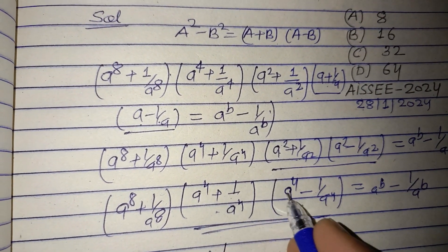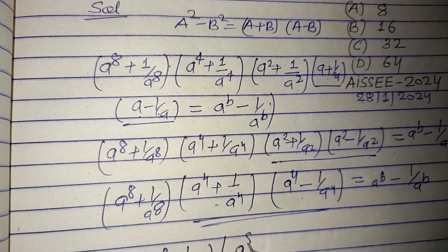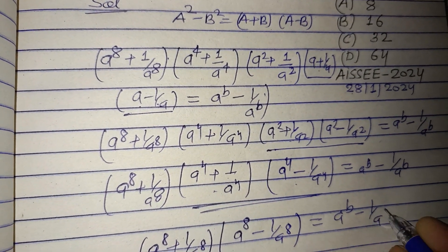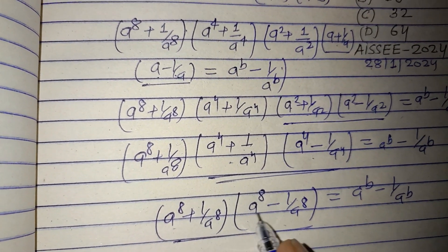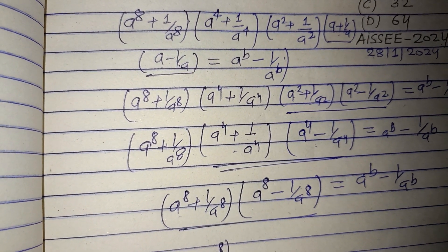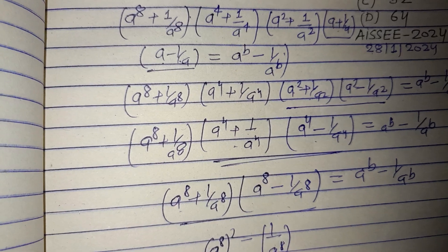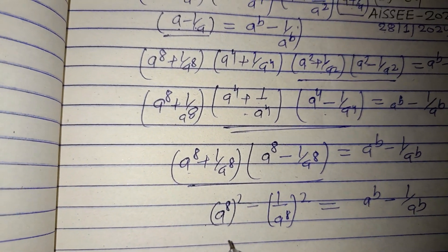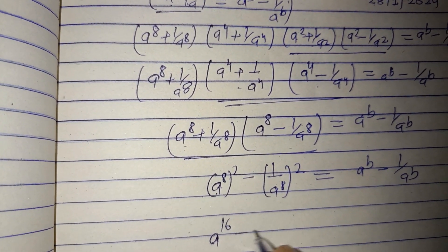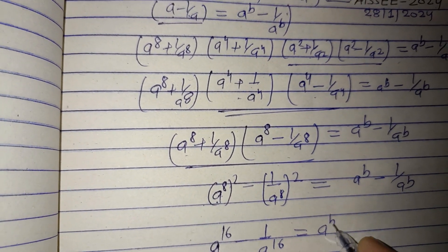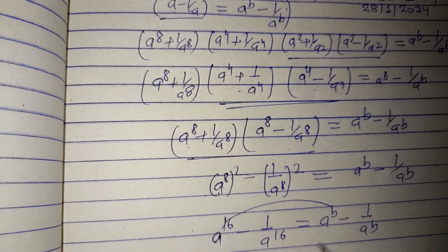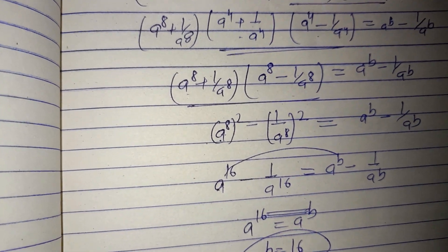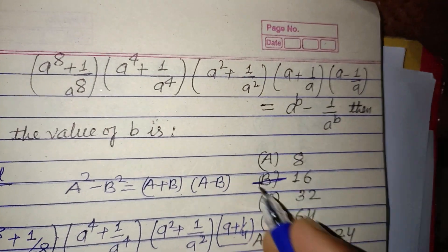Now we take (a^4 + 1/a^4)(a^4 - 1/a^4) — (a^4)² = a^8 — giving a^8 - 1/a^8. Then (a^8 + 1/a^8)(a^8 - 1/a^8) = a^16 - 1/a^16. Comparing with a^b - 1/a^b, we get b = 16. Therefore b = 16 is the correct answer.